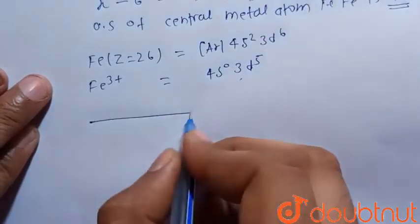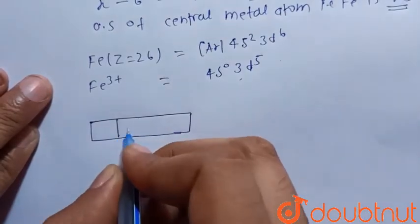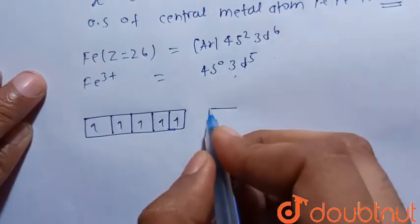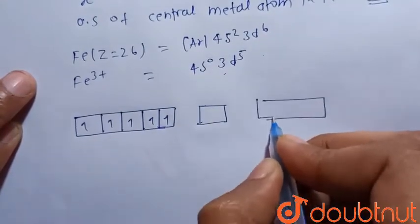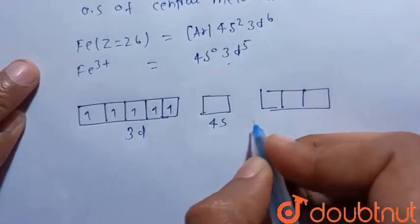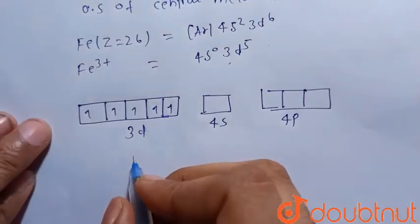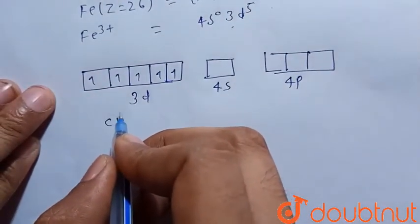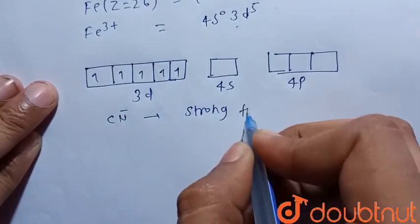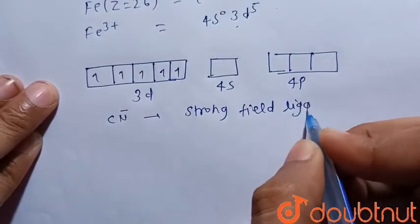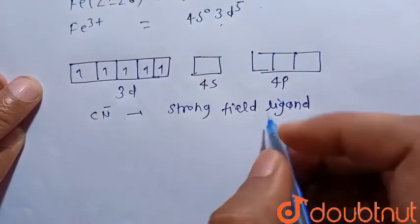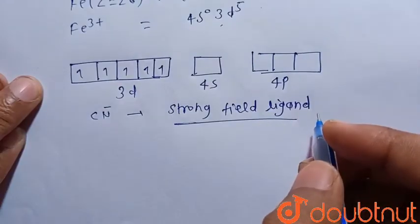So Fe³⁺ has a d⁵ configuration — that is 5 electrons in the d orbital — and the 4s orbital is vacant, next to which there is a 4p orbital. CN⁻ is a strong field ligand, so it will cause pairing of electrons.